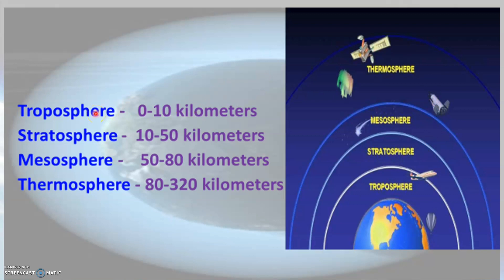Troposphere is the layer of the atmosphere that contains most of the air and oxygen, and it is also the layer where weather conditions are formed. Stratosphere is the layer that contains the ozone layer, which protects life on earth from harmful ultraviolet radiations of sunlight.